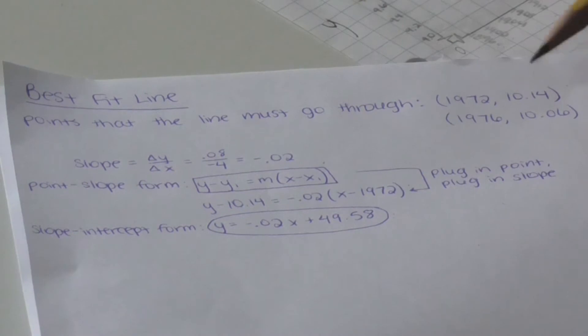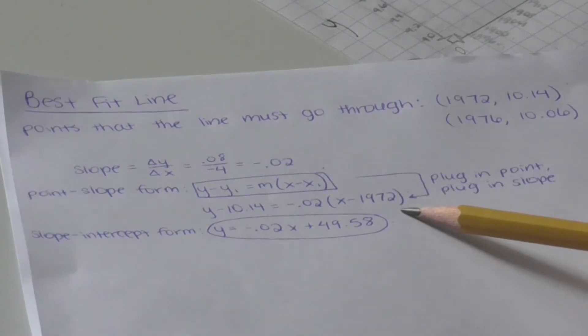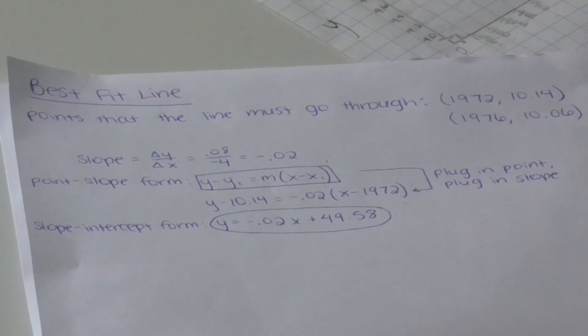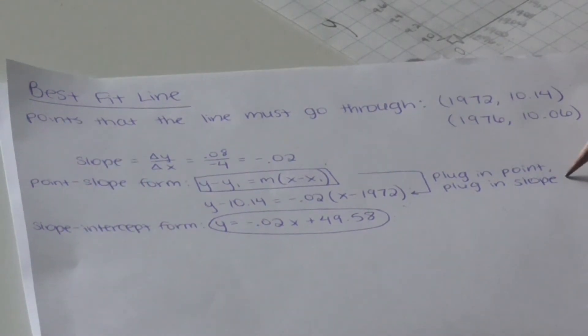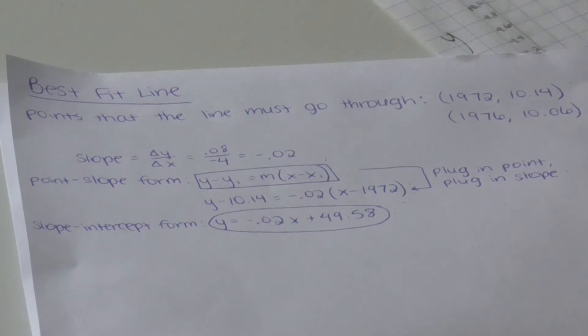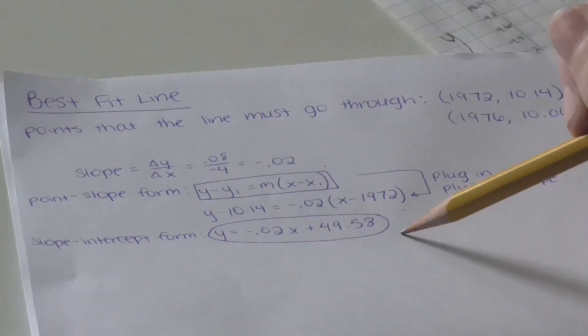y minus 10.14 equals negative 0.02 times the quantity of x minus 1972. To make this easier to manage, we rearranged this into slope intercept form. This left us with the equation, y equals negative 0.02x plus 49.58.